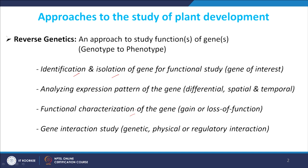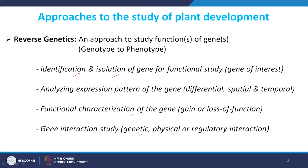The second approach is the loss of function approach, where we try to silence, knock out, or knock down a gene and then look at what happens in development. This allows us to understand if a gene is necessary for a particular function. Then we try to understand the mechanism behind a particular developmental role by studying genetic interactions, physical interactions with other regulators, or regulatory interactions.